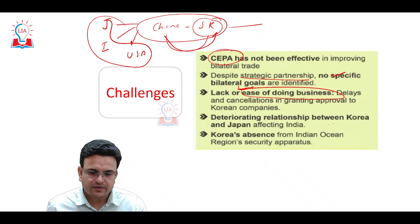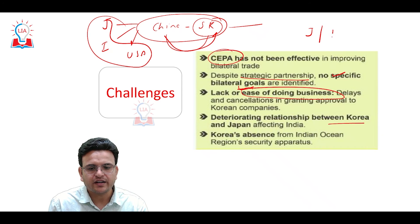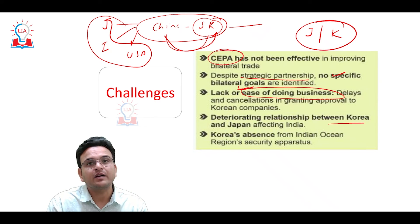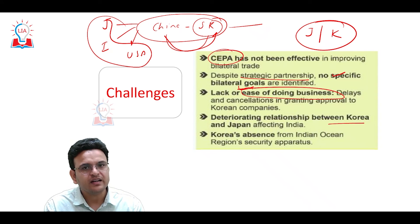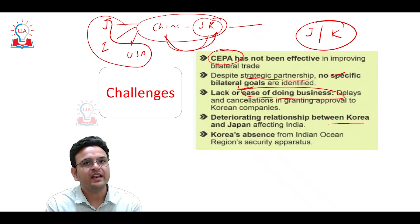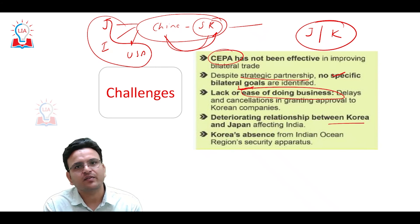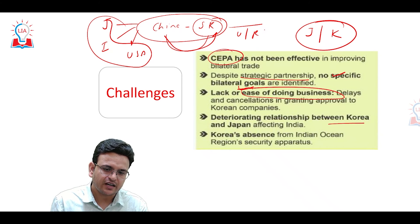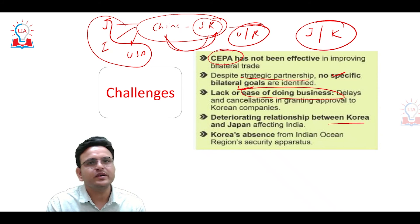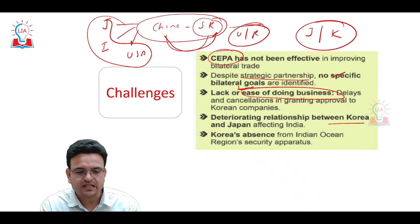Another challenge is the relationship between Korea and Japan. Japan is also very important, and managing relationships with both countries is sometimes difficult, especially when they have tensions with each other. Similarly, it is very challenging for India to maintain good relations with two countries that are adversaries — for example, balancing relations with both the USA and Russia.